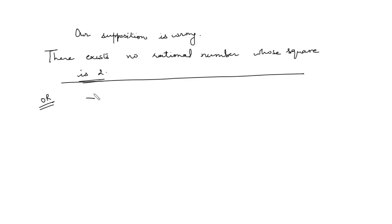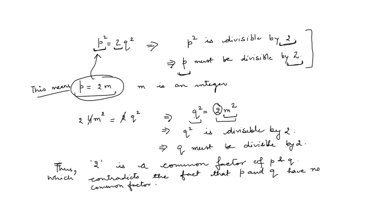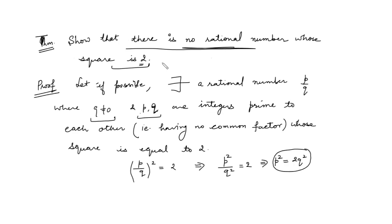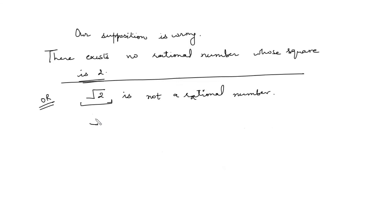Another way you can be asked this: show that square root of 2 is not a rational number. This is one and the same thing — there is no rational number whose square is 2, or equivalently, square root of 2 is not a rational number. Similarly, you can show that square root of 5, square root of 3, and square root of 8 are all not rational numbers.